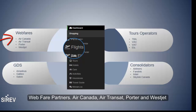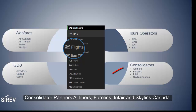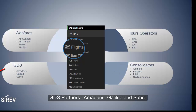Webfair partners: Air Canada, Air Transat, Porter, and WestJet. Tour Operator partners, Charter Flights: Travel Brands, Air Canada Vacations, Transat and many more. Consolidator partners: Airliners, Fairlink, Inter, and Skylink Canada. GDS partners: Amadeus, Galileo and Sabre.